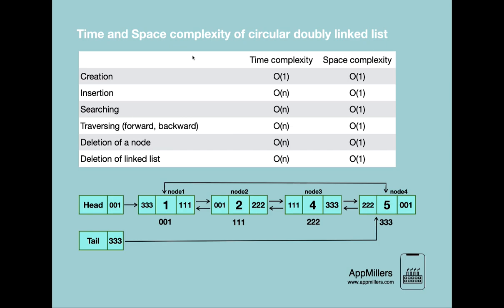Let's start with creation. It's a constant time operation because all we have to do is create a blank node, assign a value to it, and link it with head, tail, and itself. All these operations take constant time, so the time complexity is O(1). Similarly, the space complexity is O(1) because we just create a node and assign a value to it.